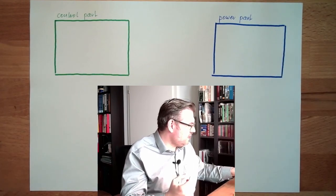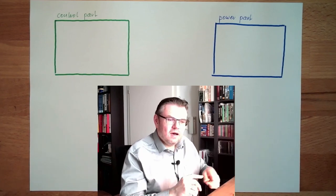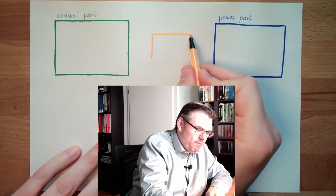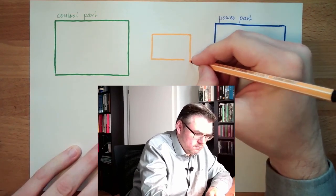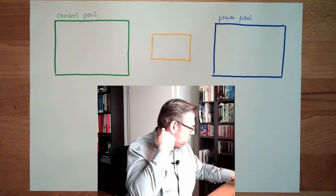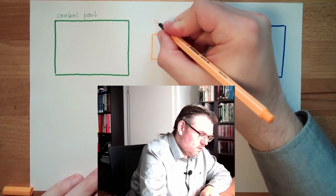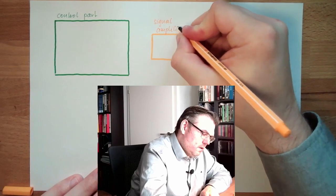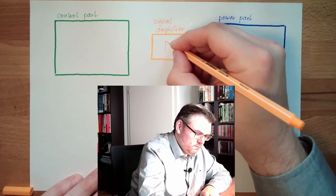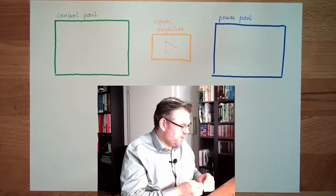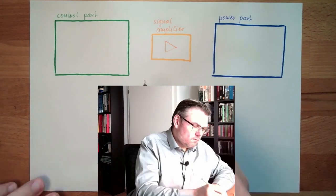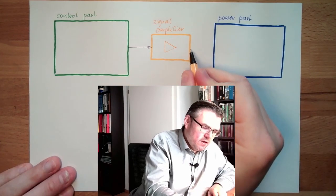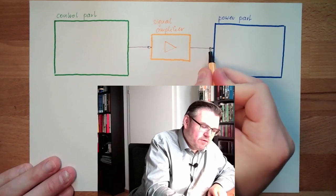In between, there might be something which is gaining the signal — signal gain — some sort of amplifier, a signal amplifier. Sometimes this is necessary simply to take the signals from the control part, which are usually low in energy, convert them, and do the work in the power part.